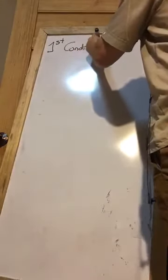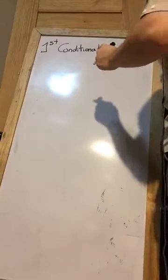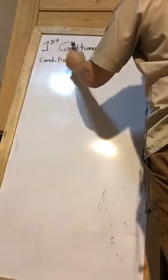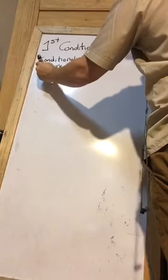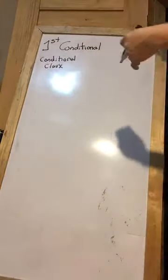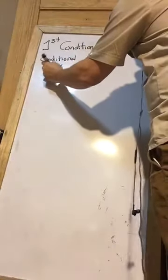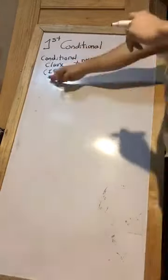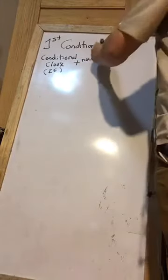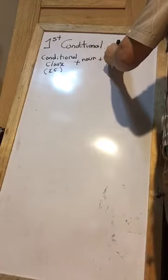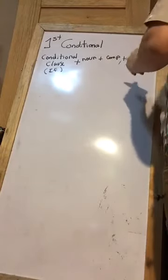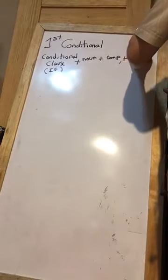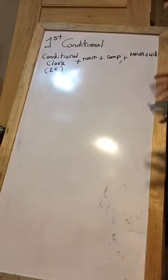Here is the formula for first conditional sentences. Starting with if: 'If' plus noun plus complement, then a comma, then noun plus will plus complement. So: if-clause first, comma in the middle, then the main clause with will.